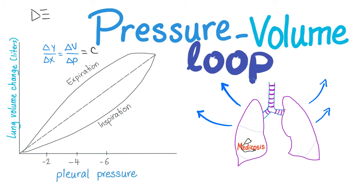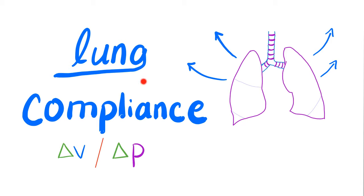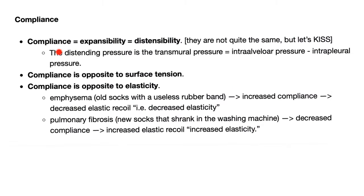In my previous video called Lung Compliance, we actually talked about compliance — delta V over delta P. If you haven't already watched that video, it's very unlikely that you will understand this video to the fullest. Please go ahead and watch Lung Compliance first; it's in the same playlist called Pulmonology. Compliance is expansibility, is distensibility. Let's keep it simple: compliance is delta V over delta P.